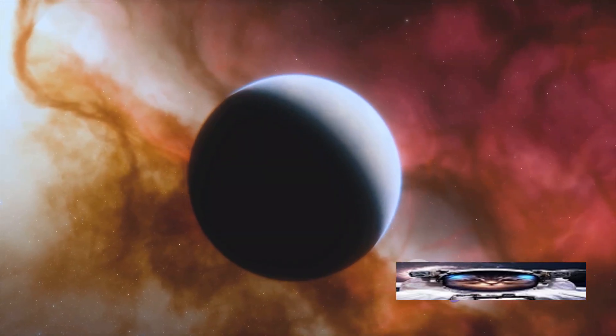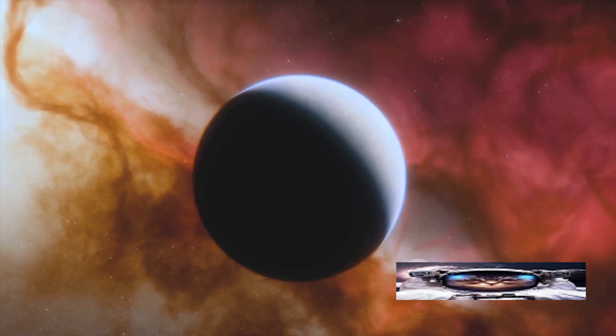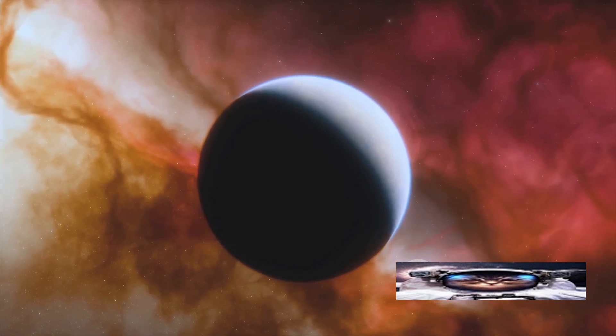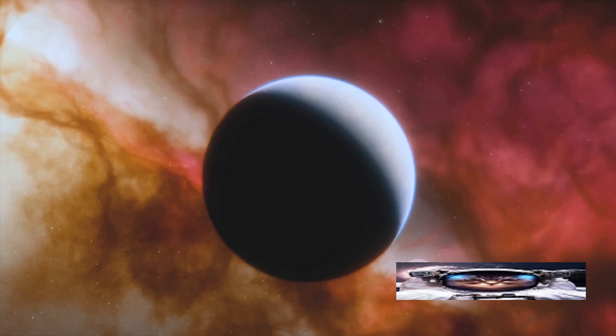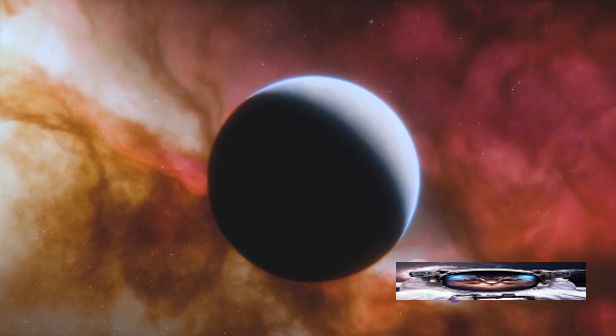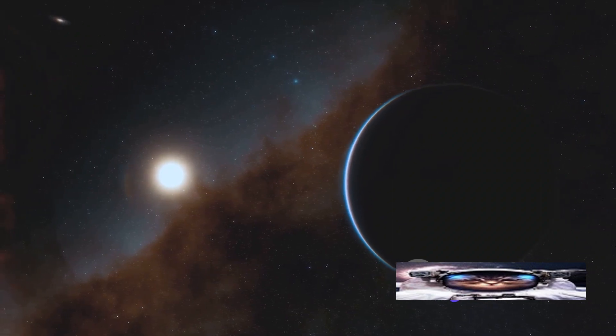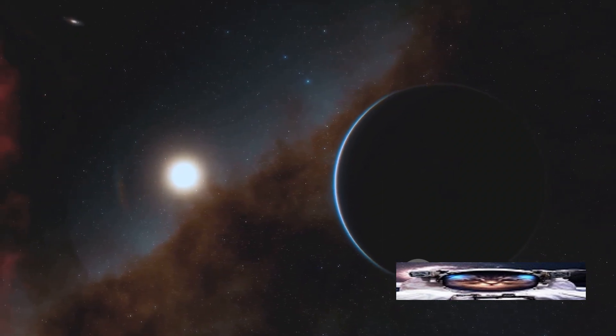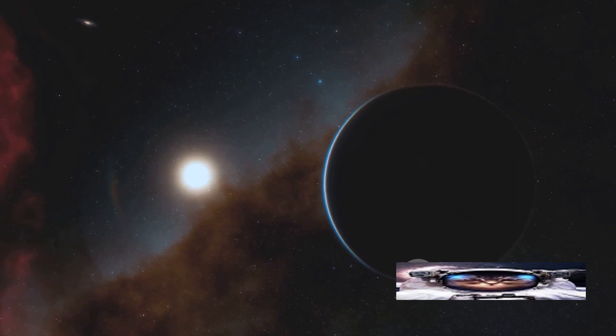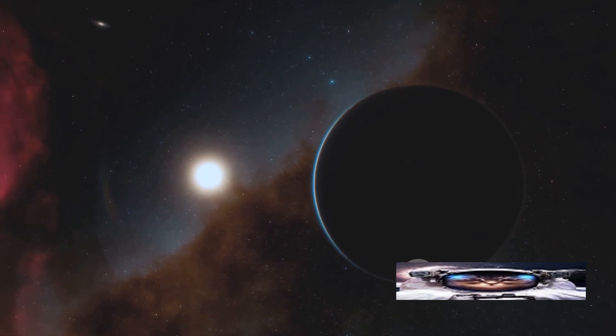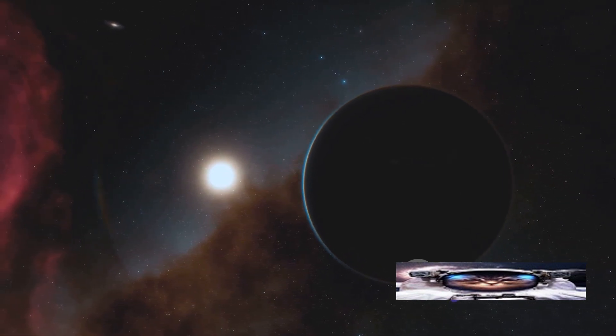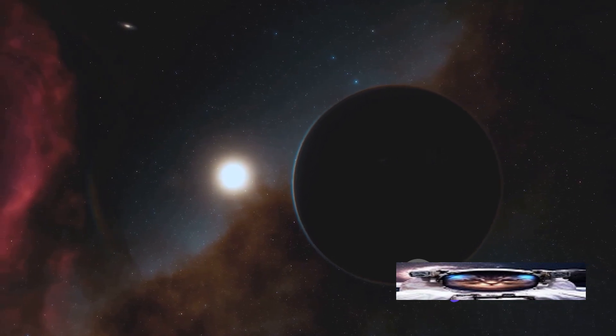One cutting-edge approach is the hunt for exoplanets, planets that orbit stars outside of our own solar system. With advanced telescopes, we're able to spot these distant worlds, some of which may hold conditions suitable for life. We've found thousands of exoplanets, and among them are a select few that sit in the so-called Goldilocks zone. Not too hot, not too cold, but just right for life as we know it.